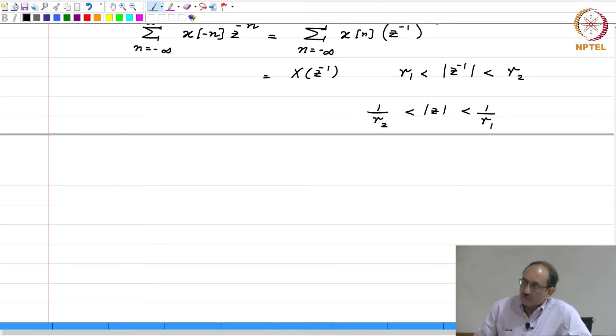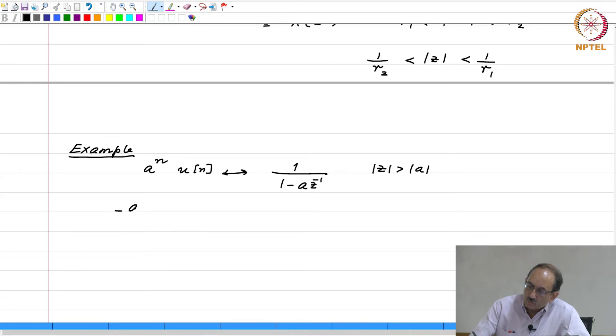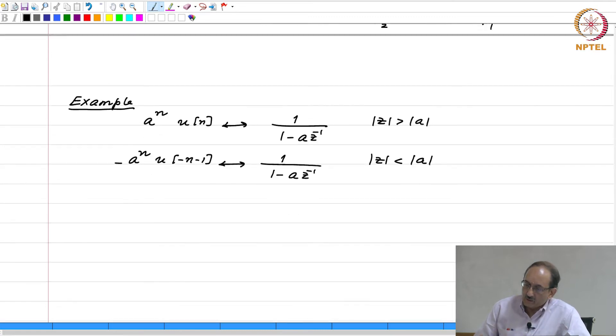And again, we can use this property to derive this transform. We know that a to the n, u of n is 1 by 1 minus a z inverse mod z greater than mod a. And we also know that minus a to the n, u of minus n minus 1 is 1 by 1 minus a z inverse mod z less than mod a. So, we will derive the second transform starting from the first using the time reversal property.